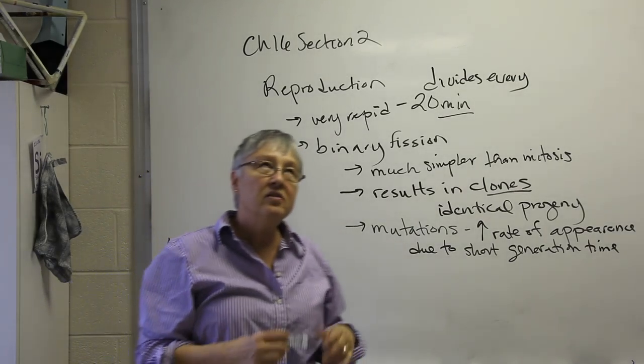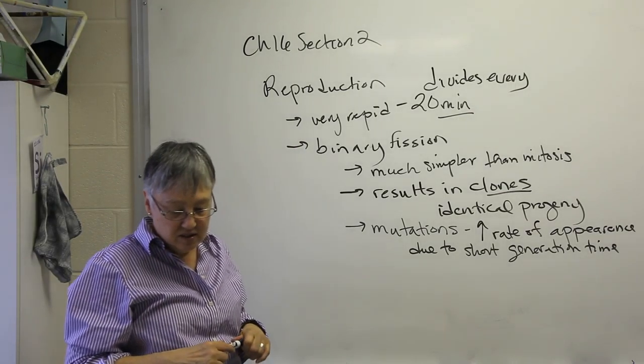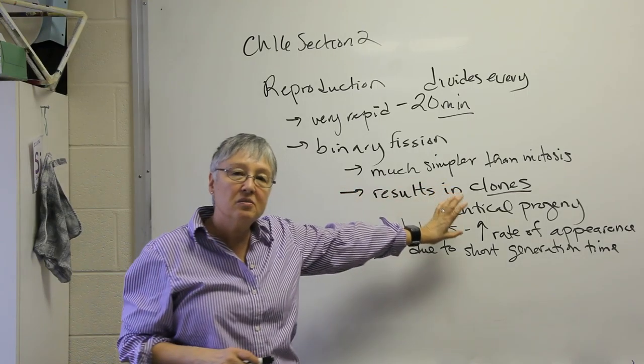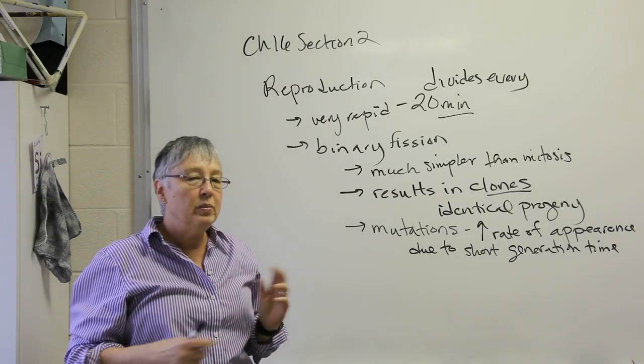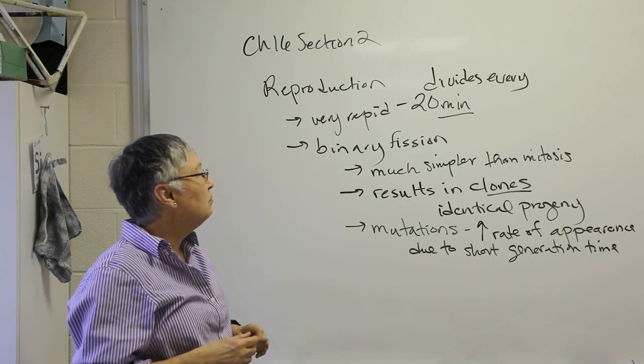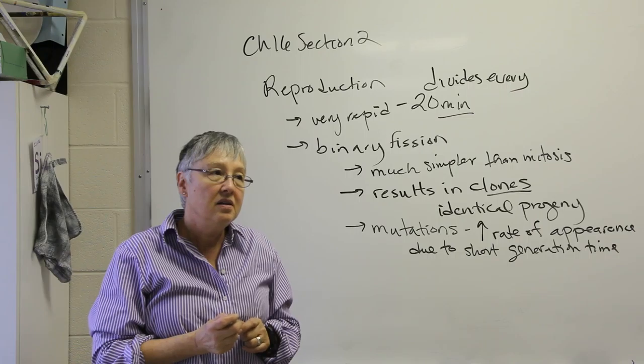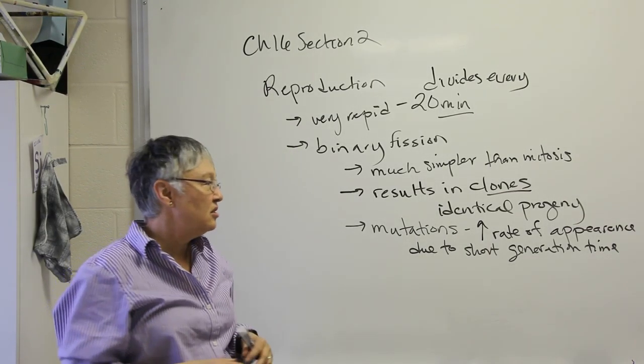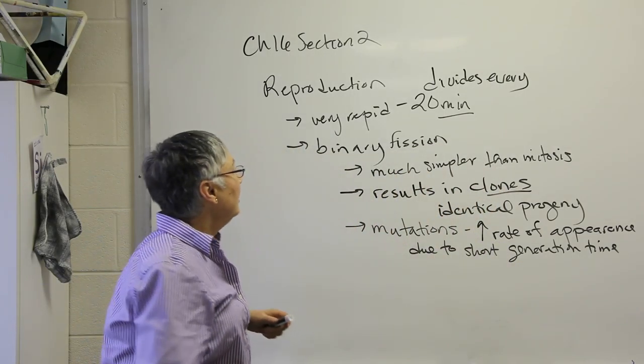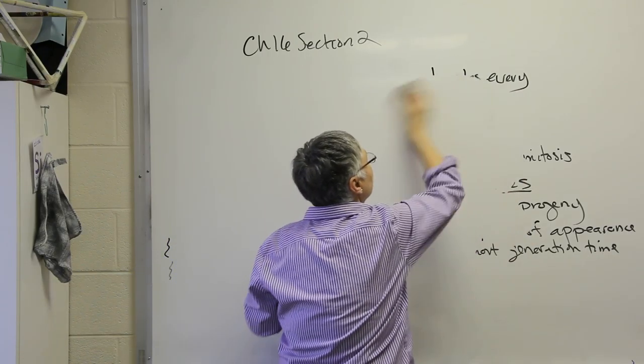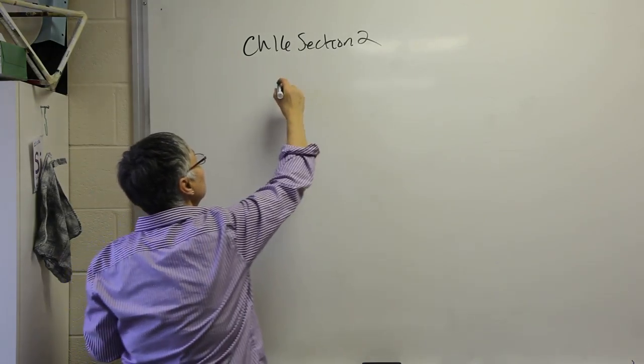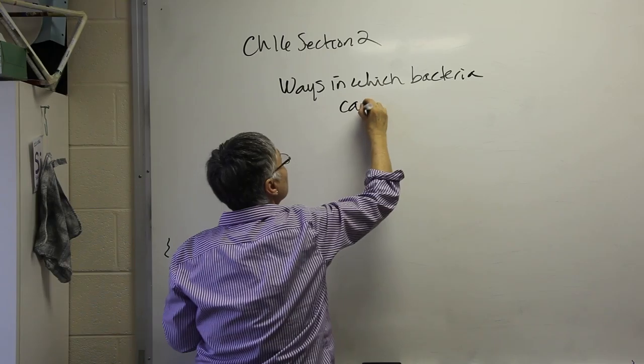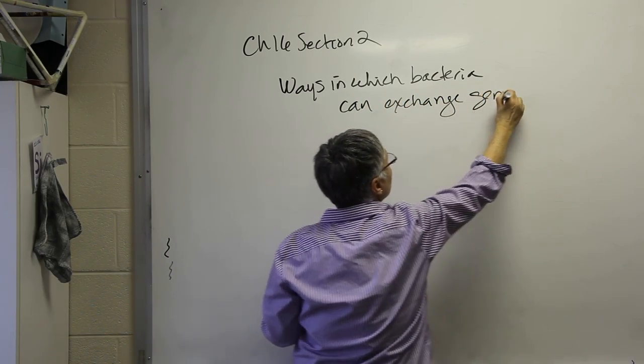One other aspect of bacteria that I want to talk about is what is sometimes called bacterial genetics. Bacteria, as I mentioned, divide very simply. They don't have a reproductive cycle that allows for exchange of genes. But there are some types of behaviors they initiate that can lead to recombination of genes. So there's three categories that I want to talk about, and we've talked about some of these before. In fact, two of them before.